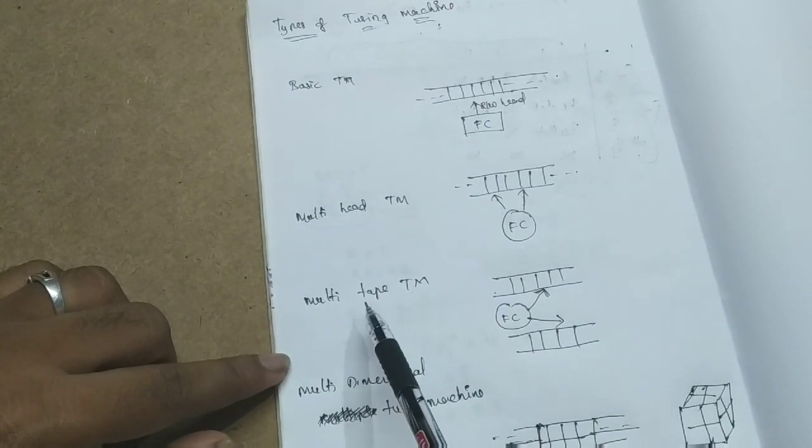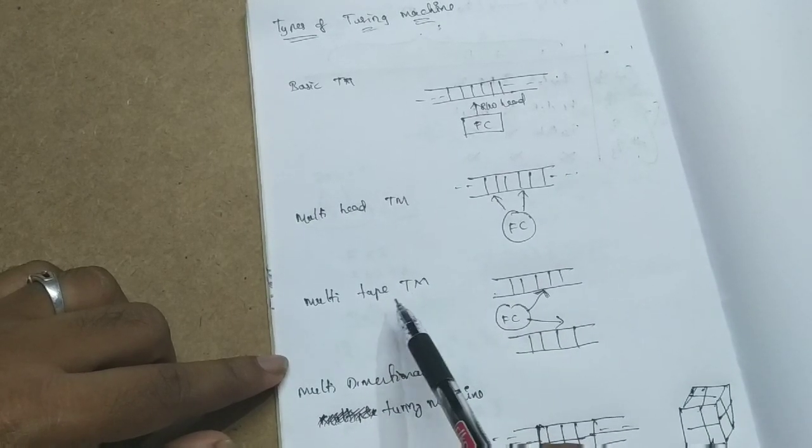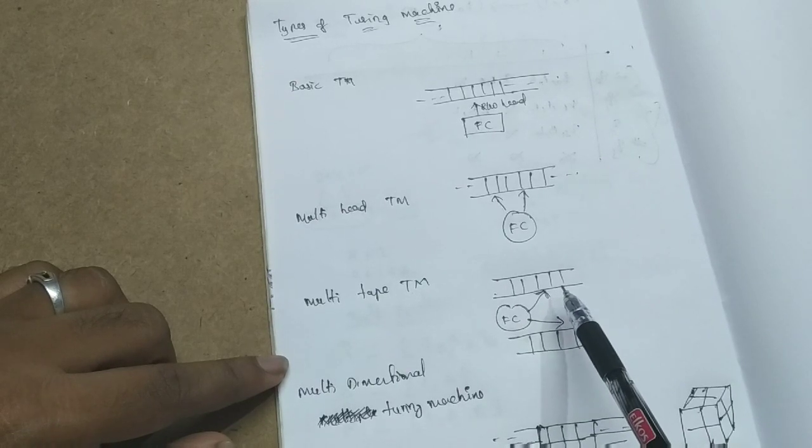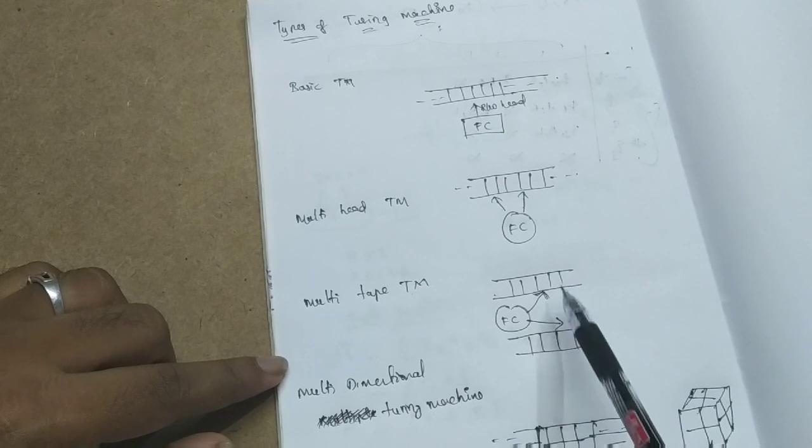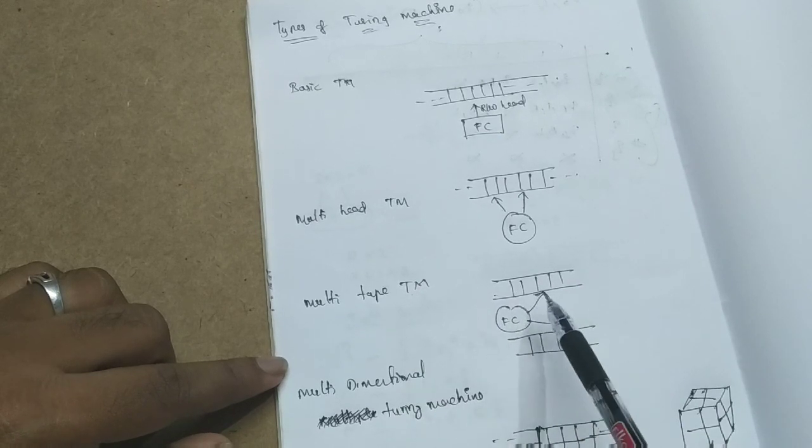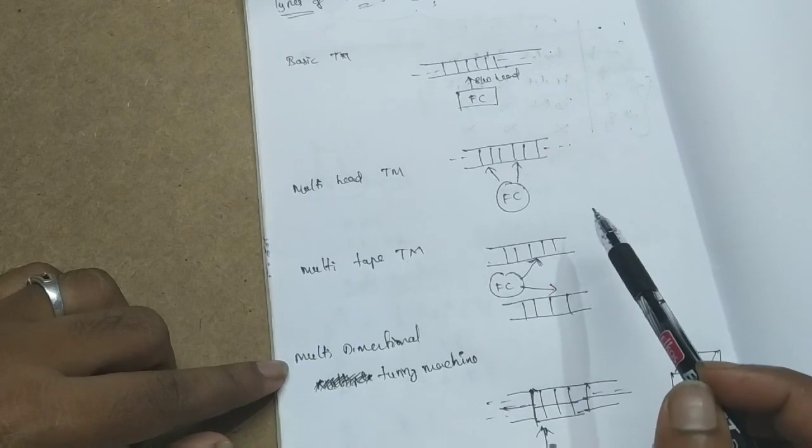Another type is Multi-tape Turing machine or Multiple Turing machine. In the basic machine, I am using only one tape. You can use more than one tape. That is Multiple Tape Turing machine. It has the same finite control, read-write head, and more than one tape.